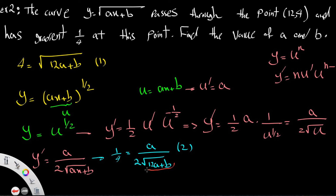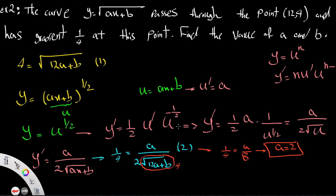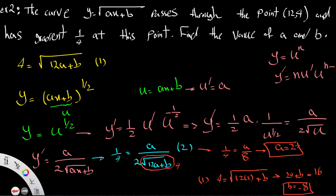From equation 1, root(12a plus b) equals 4, so substituting into equation 2 gives 1/4 equals a over 8. Cross-multiplying gives 8 equals 4a, so a equals 2. Substituting back into equation 1: 4 equals root(24 plus b), squaring both sides gives 16 equals 24 plus b, so b equals negative 8. Therefore a equals 2 and b equals negative 8.